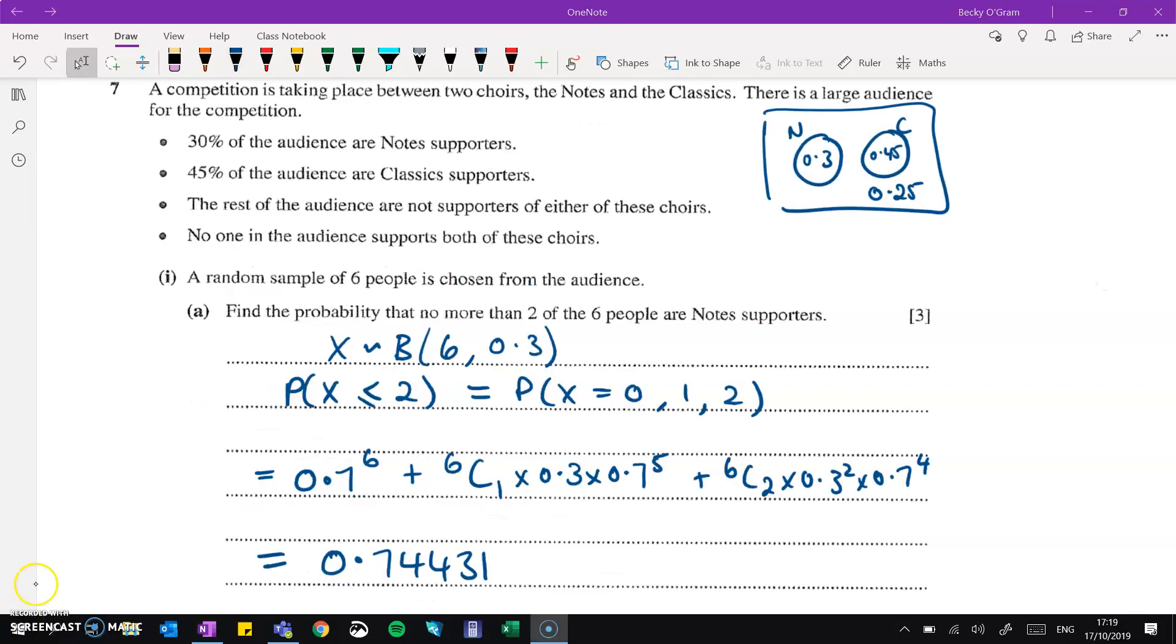It brings us to our final question, where we are told about some supporters for these two choirs. I've put them into a little Venn diagram over here to help me picture what's happening. There's no overlap. We're told that no one in the audience supports both of the choirs. Six people are chosen at random. Find the probability that no more than two of the six are note supporters. So this is a binomial distribution with six trials. Now the probability they are a note supporter is 0.3. We want the probability that x is less than or equal to 2, and we use binomial distribution to do that.